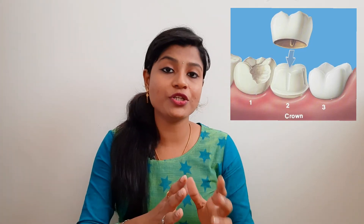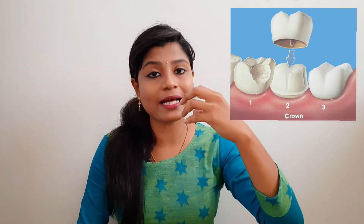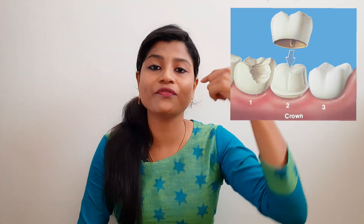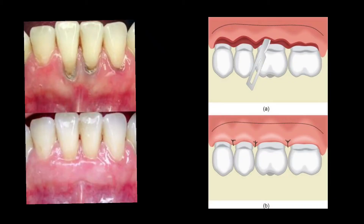If the sensitivity is severe due to erosion, attrition, or cervical abrasion, it can be treated with crown placement after reduction of the tooth. If the sensitivity is due to gingival recession, it can be treated by flap surgery, where the gingiva is repositioned to reduce exposure of the root surface and reduce sensitivity.